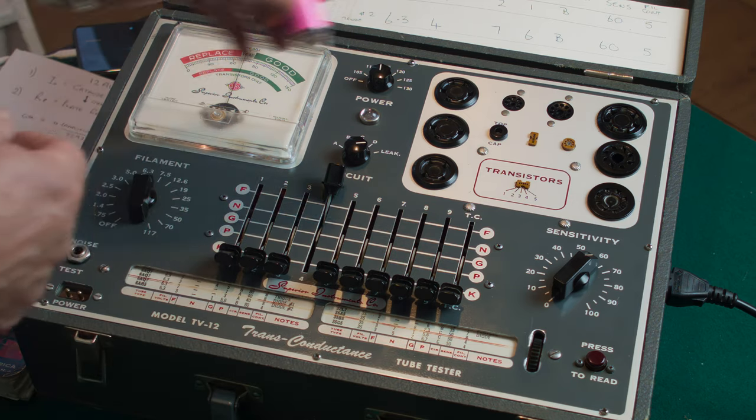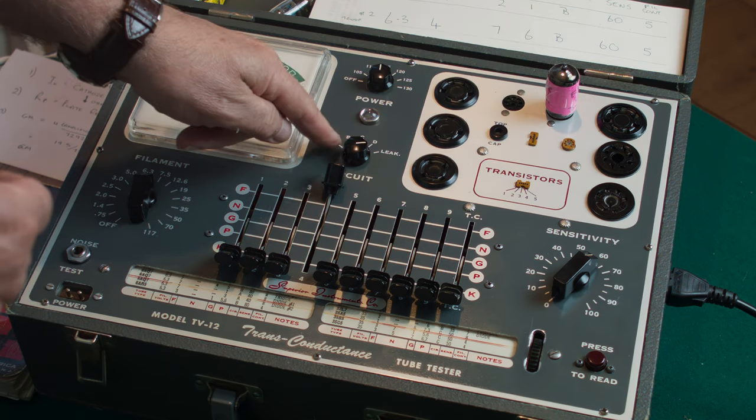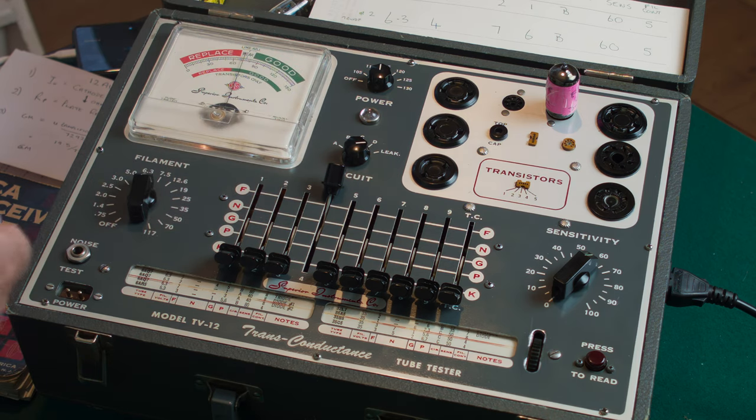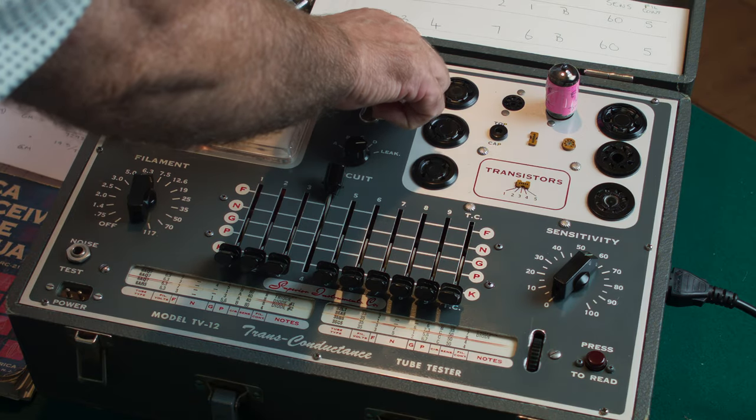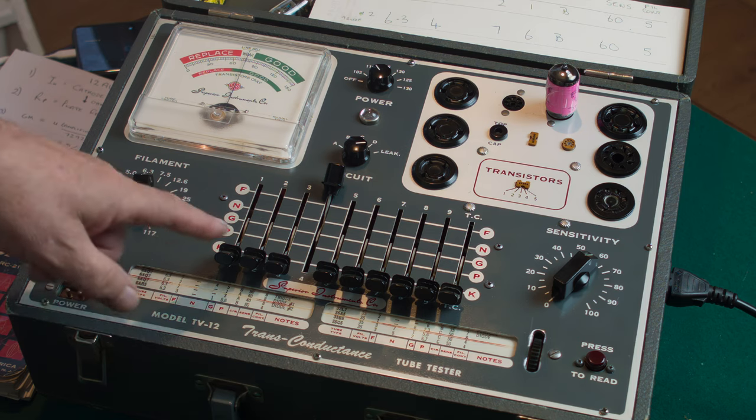Just put the valve in now. This switch here ABCD leak has to be in the leak position because we're looking for leaks. Just let it warm up. I can just increase the filament voltage, that's just setting the line adjustment with the valve in.